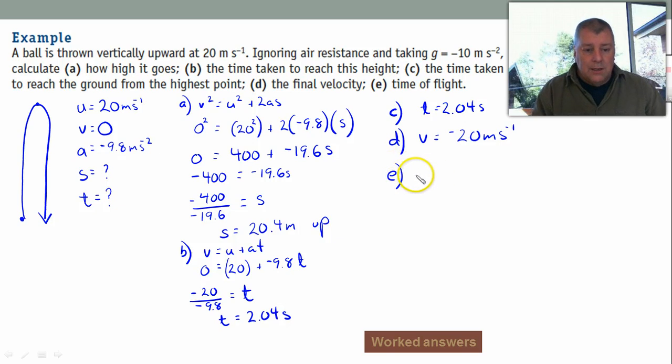And E, the time of flight. I would call this T flight equals 2 times T that we worked out before. So that's going to give us 4.08 seconds. Alright, so we've now worked out that. And that's a pretty typical question.